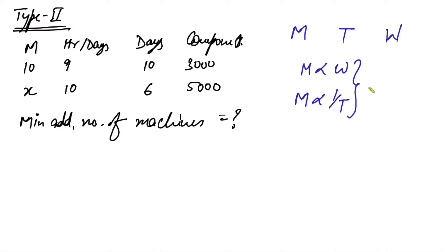When we combine the two things, we get M is proportional to W over T, which gives us an expression like M equals constant times W over T, or M times T over W equals constant.